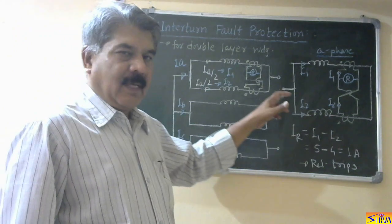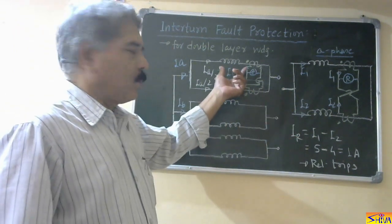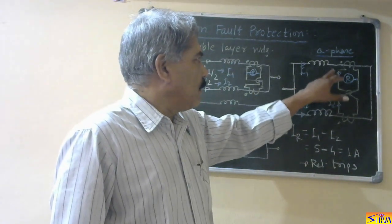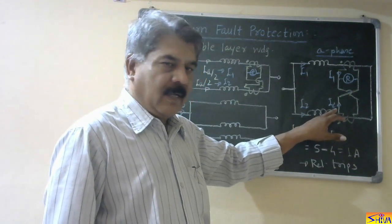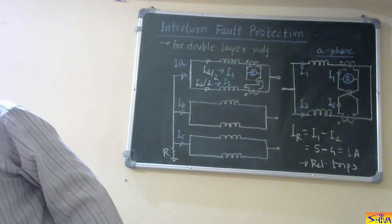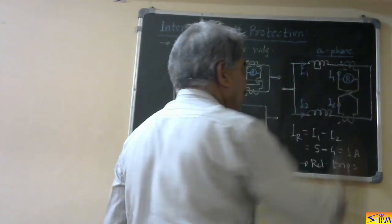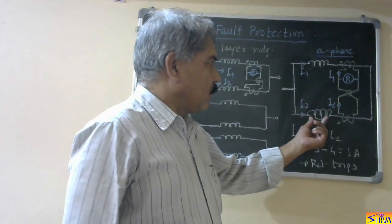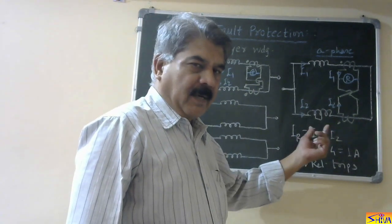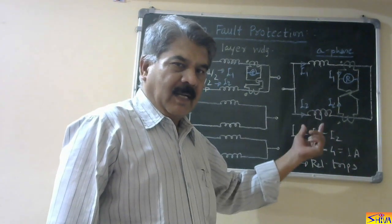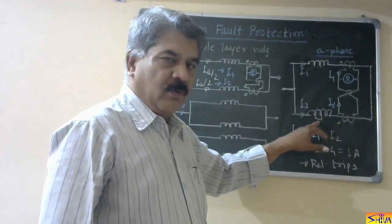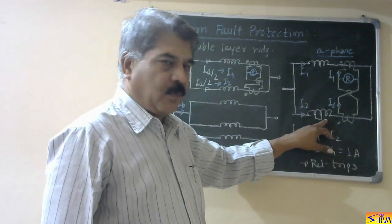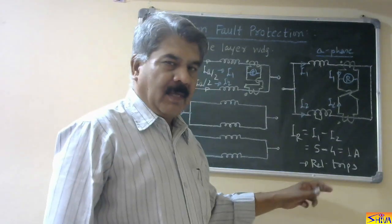Let us say 1000 amperes is the current in phase A. Under normal conditions, 500 amperes flows through each winding layer. Using a CT of 500/5 ratio, each CT secondary produces 5 amperes, so the net relay current is zero. Now suppose there is an internal fault where some portion of one winding layer is bypassed. This current remains 500 amperes in the healthy layer, but due to reduced EMF, this current becomes 400 amperes in the faulted layer. So I1 is 5 amperes and I2 is 4 amperes — the net current through the relay is 1 ampere, and the relay trips.